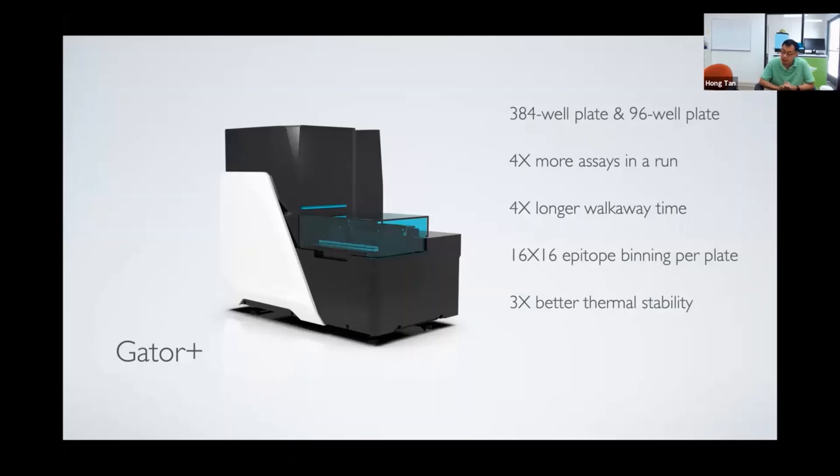Labs are air conditioned. In summertime, the cooling system turns on and temperature drops a few degrees. In wintertime, the heater kicks in and temperature raises a few degrees. We want to minimize the ambient environment impact on our measurement. We increased the thermal shield on this machine, so we have three times better thermal stability than the first Gator and our competitors.